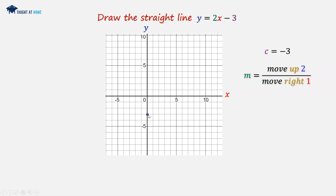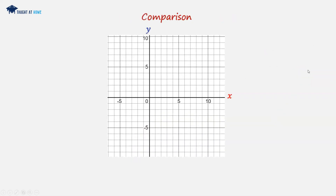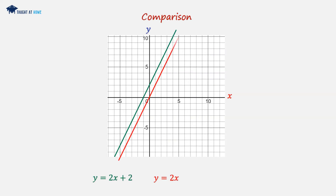And then from that point, we're going to move up 2 and move to the right 1, repeating until we have a sufficient amount of points, and we're going to join those up. In comparison, we have our first line y equals 2x plus 2, we have y equals 2x, and we have y equals 2x minus 3.